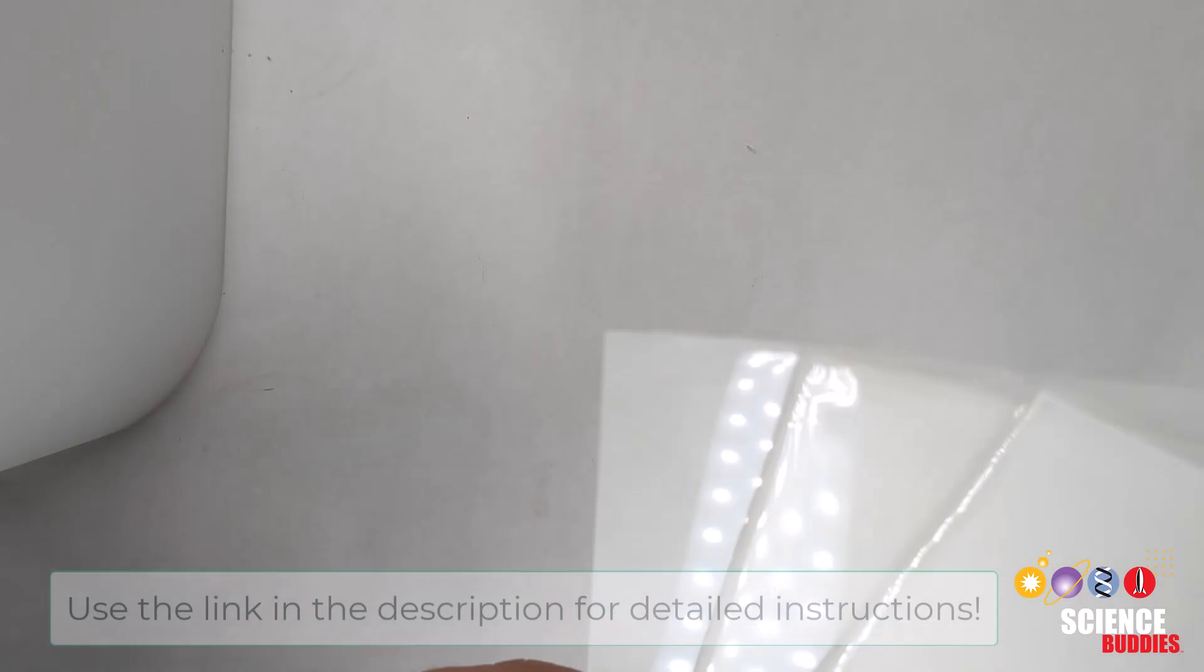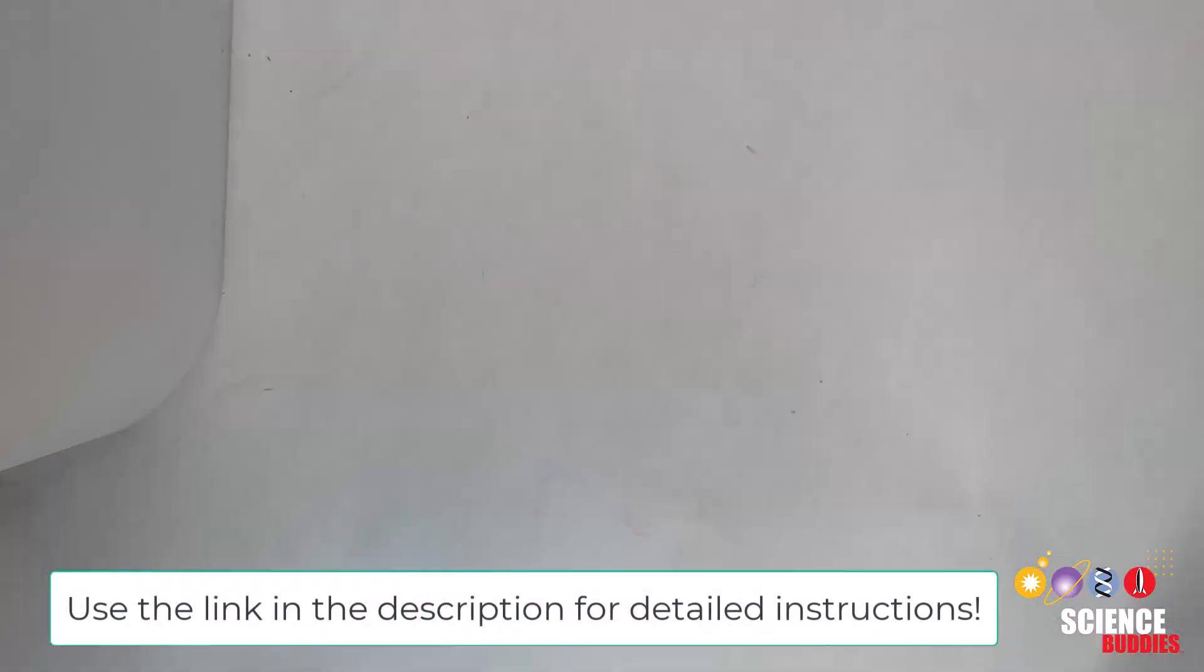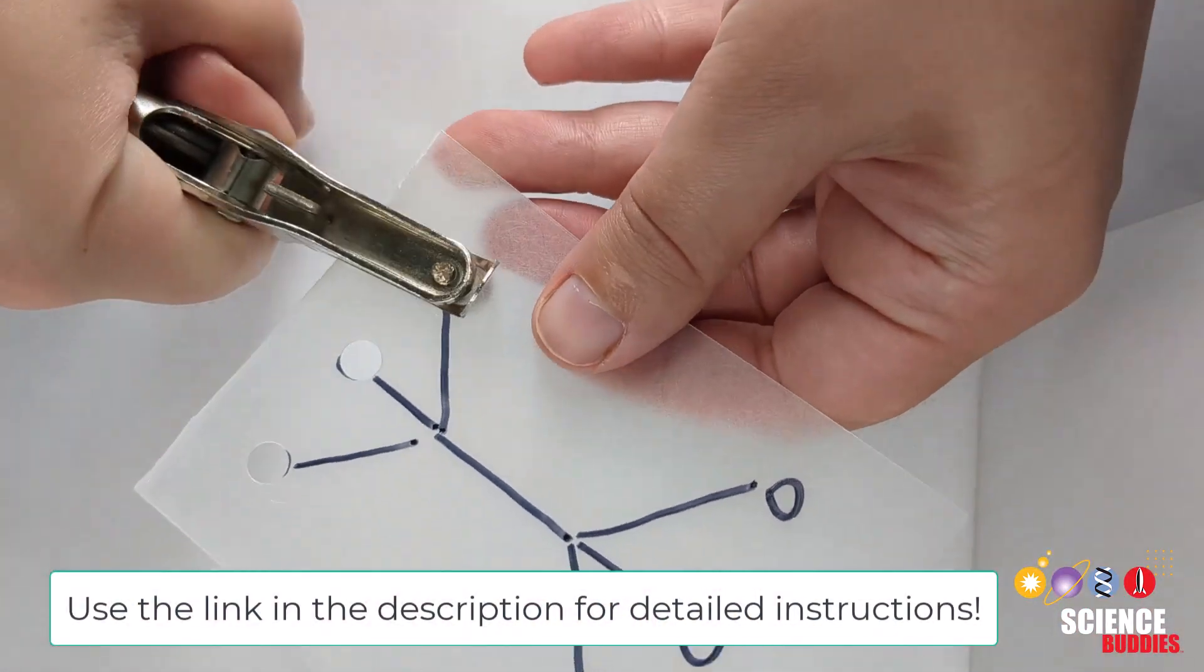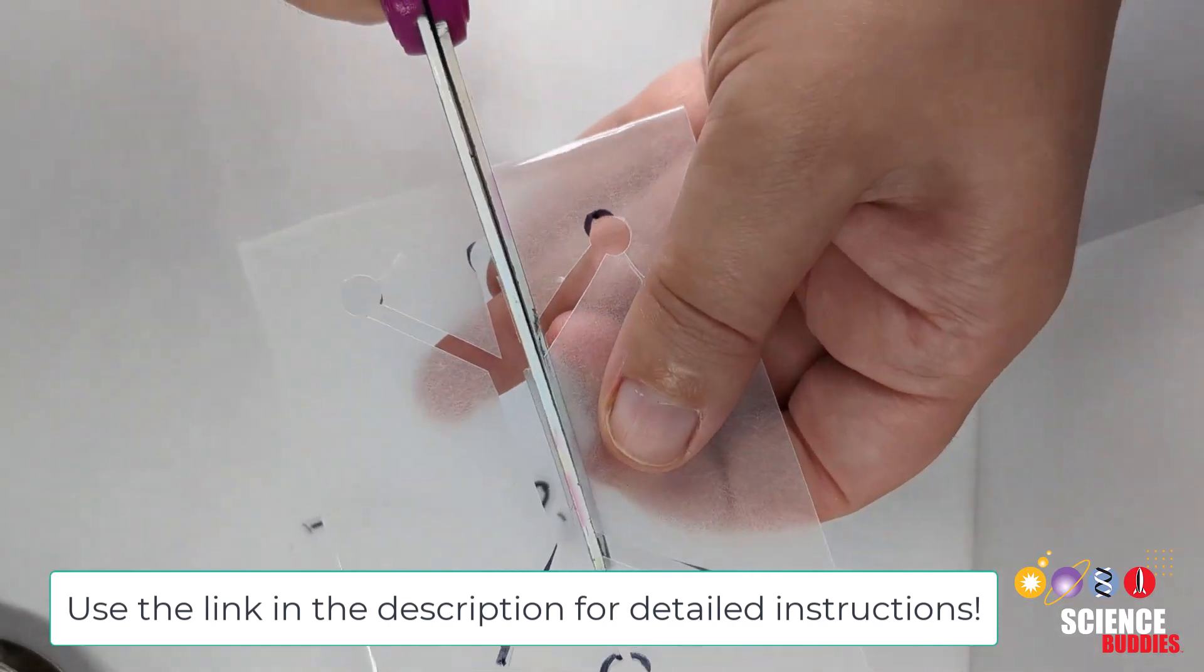First, you will need three similarly sized polystyrene sheets to start your experiment. On the middle sheet, draw your design and cut it out using a hole punch and scissors.